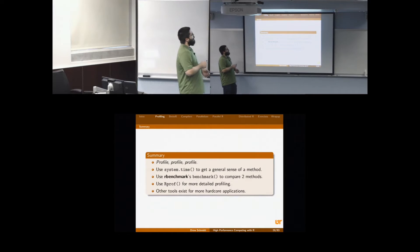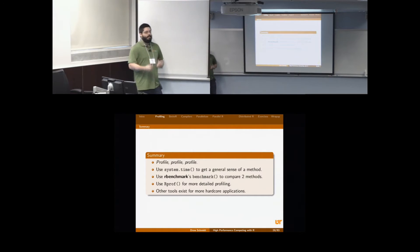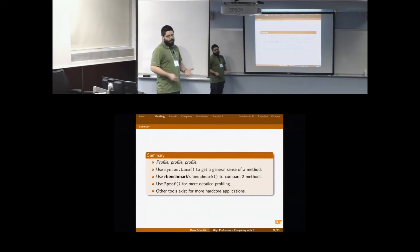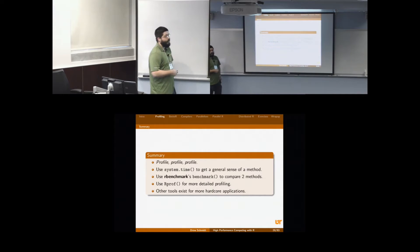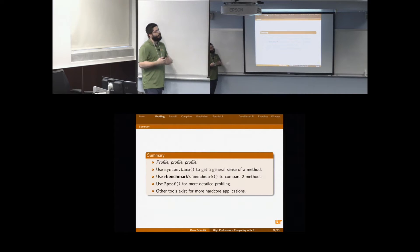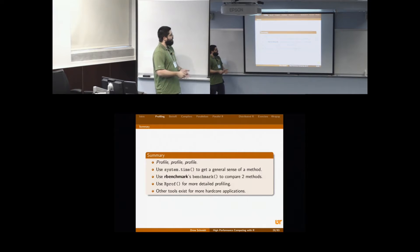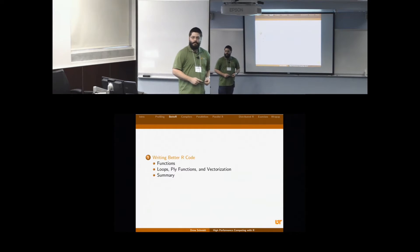Quick summary: profile, profile, profile. If you really care about performance and scalability, you have to get your hands dirty with Rprof at the least. System.time is good for a general sense of your main method's performance. Rbenchmark is good for comparisons. Rprof is really the one for getting your hands dirty. For most use cases living purely inside R code, Rprof is probably sufficient. Any questions before we move on to writing better R code in general?